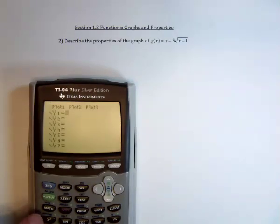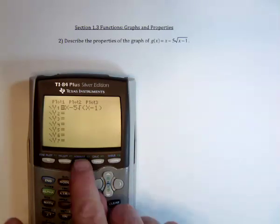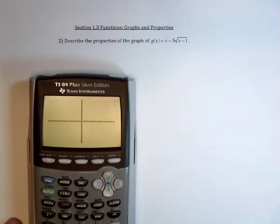So y equals x minus 5, and then square root x minus 1, and then zoom standard, and take a look at the graph.